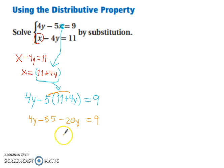So we've got 4y minus 55 minus 20y, and that equals 9.